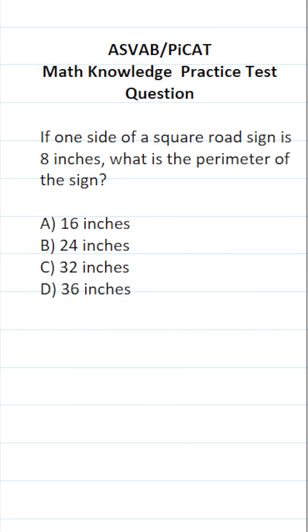This math knowledge practice test question for the ASVAB and PiCAT says, if one side of a square road sign is 8 inches, what is the perimeter of the sign?